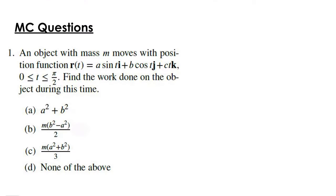Going to question 1. An object with mass m moves with position function r(t) = a sin(t) i + b cos(t) j + ct k, on the interval from 0 to π/2. We want to find the work done. There are two approaches we can take. The longer one would be to do the integral of F·dr, but we're going to do the faster way, which is to employ the work-kinetic energy theorem. We know that work is the change in kinetic energy.